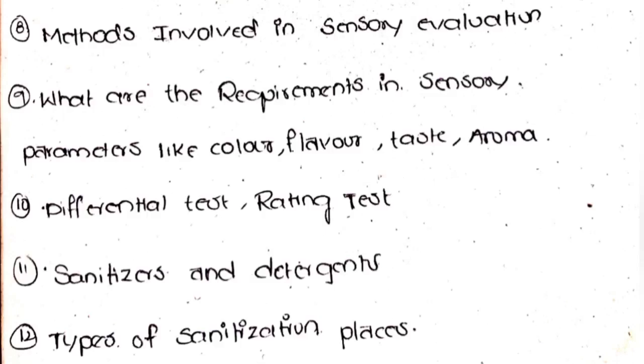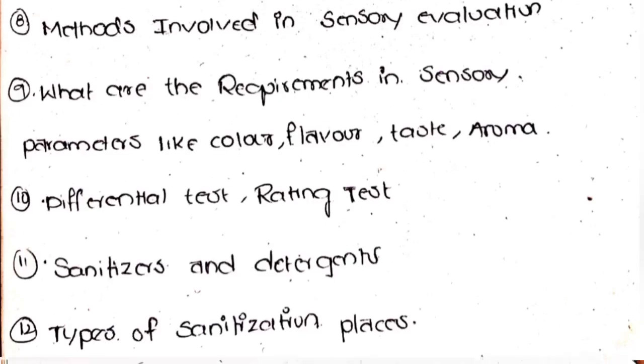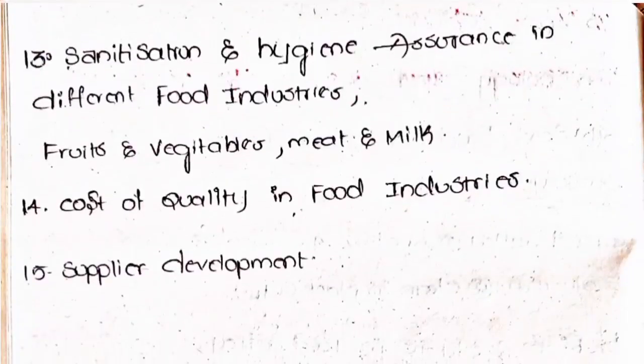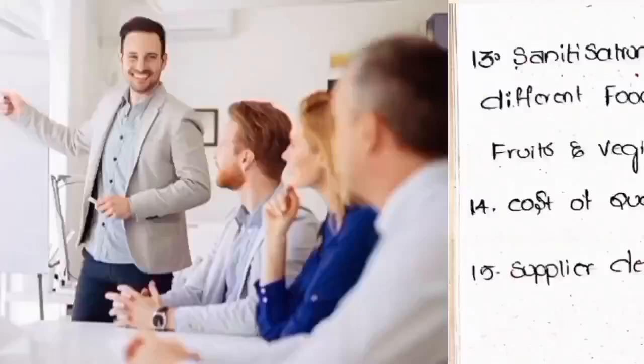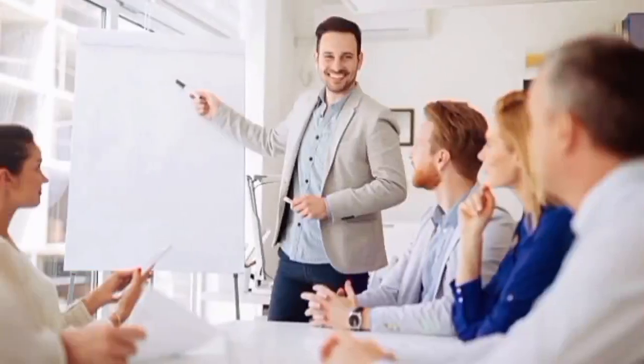Twelfth, types of sanitization places; thirteenth, sanitization and hygiene assurance in different food industries like fruits and vegetables, meat, and milk; fourteenth, cost of quality in food industries; fifteenth, suppliers development.